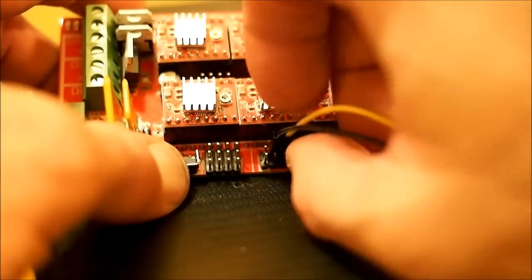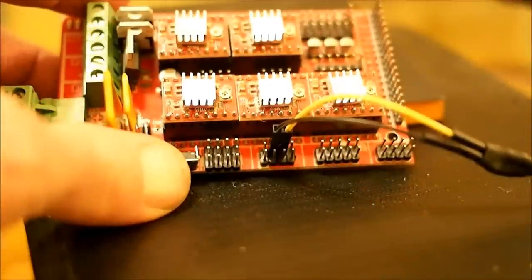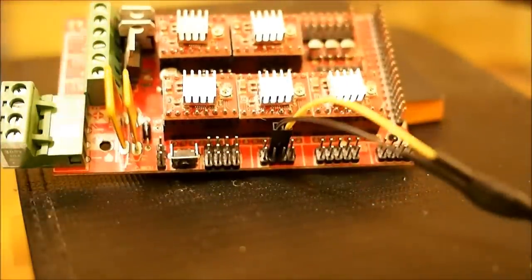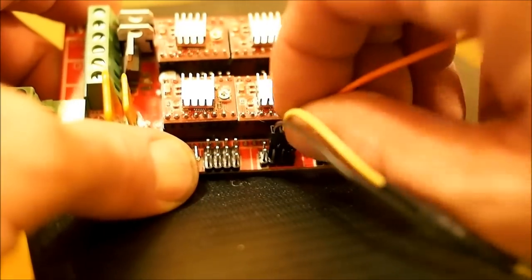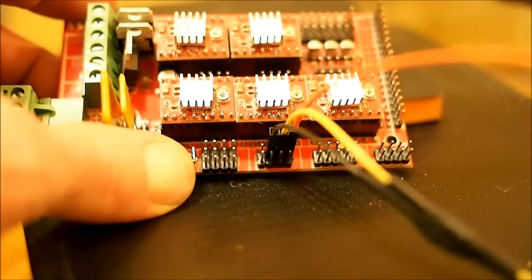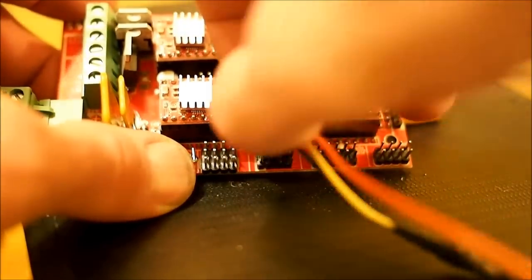And on the other side, it'll hook into ground and RX on the Bluetooth module. We're going to go ahead and for this example use orange for our RX on the RAMPS. And we'll use white, I'm out of red wires, for our VCC.